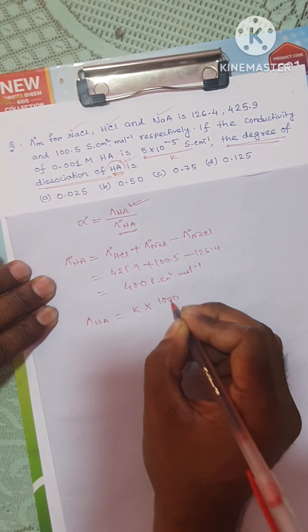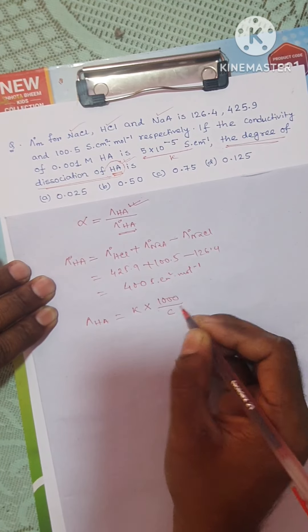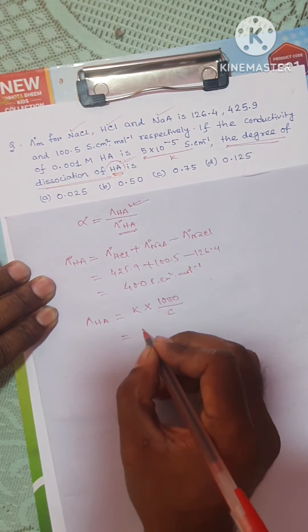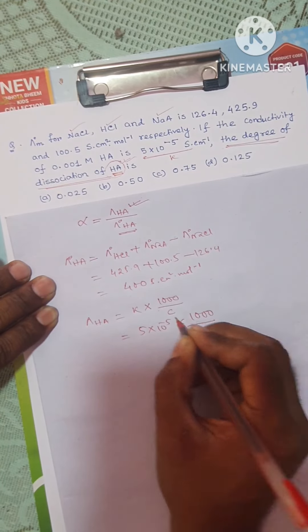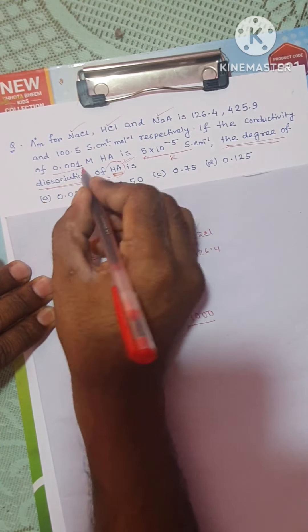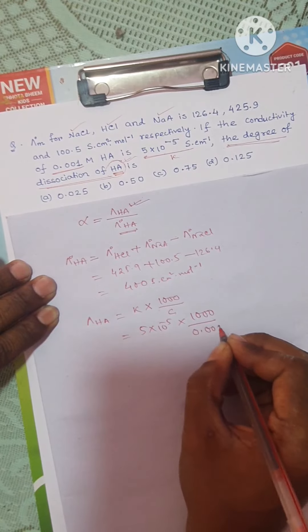Lambda equals conductivity times thousand divided by molar concentration. So conductivity is 5 into 10 to the power minus 5, times 2000, divided by molar concentration 0.001.